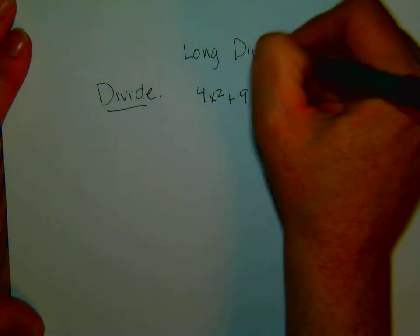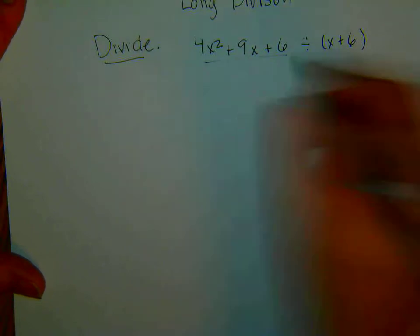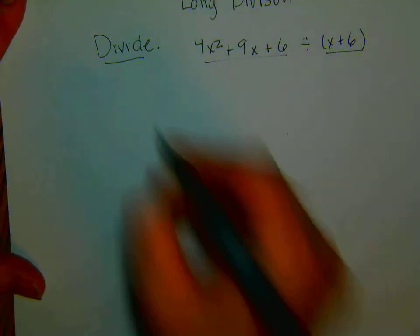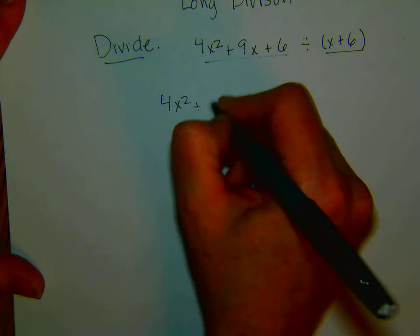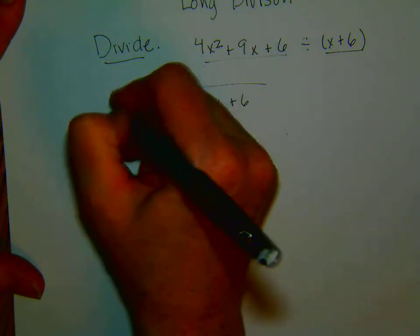Long division. This is the dividend, this is the divisor. So we take 4x squared plus 9x plus 6 divided by x plus 6.